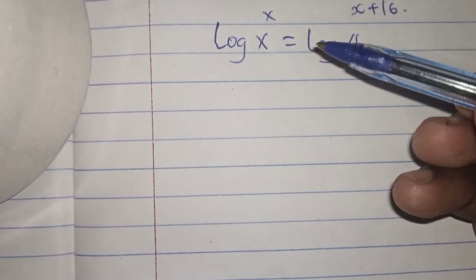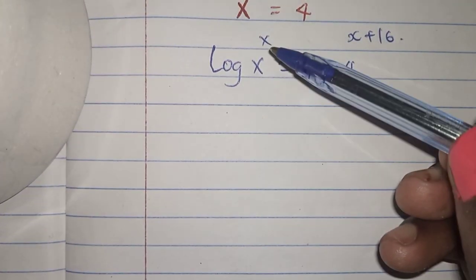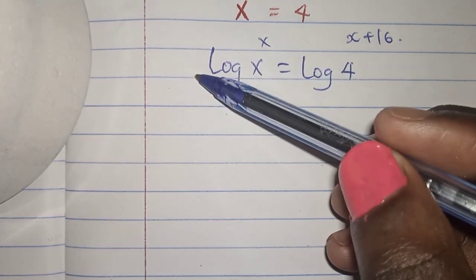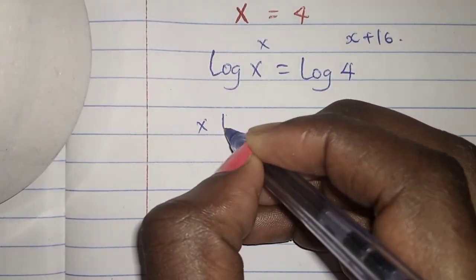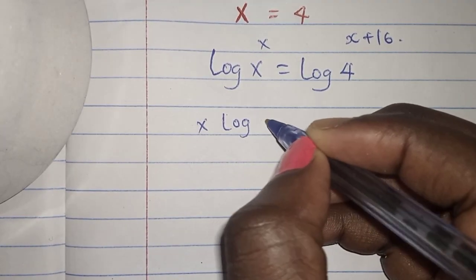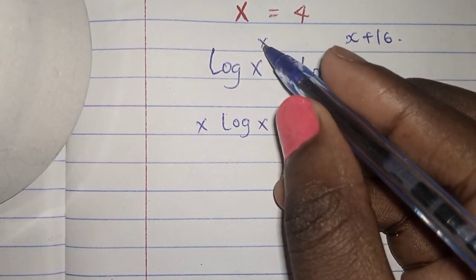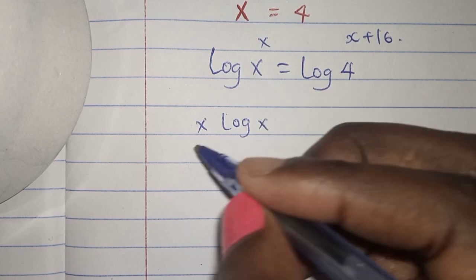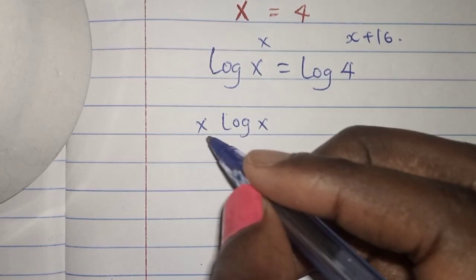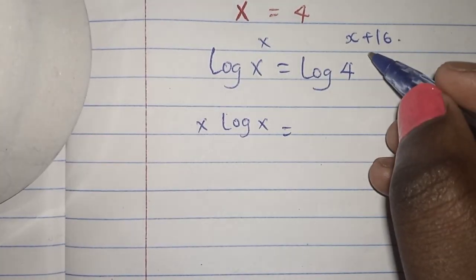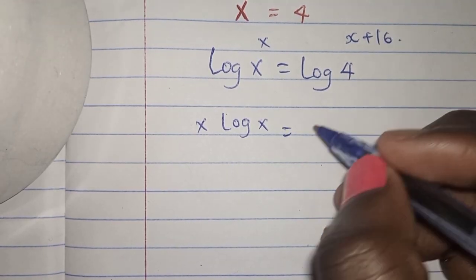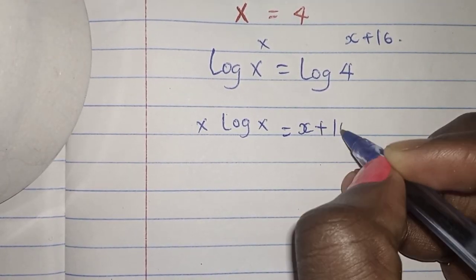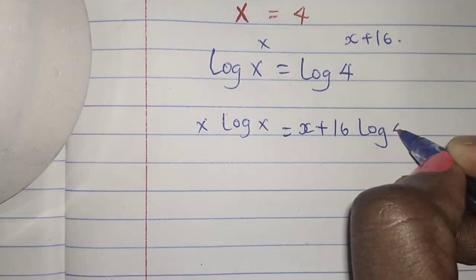So the next step, if you can remember this rule of logarithm, I'm going to bring this x before the log. So if you can remember this rule, x log x. The x that was initially on top of x, I've brought it to the other side before the log is equals to, I'm going to do the same for this side. So I'll bring x plus 16 log 4. Have you seen that?